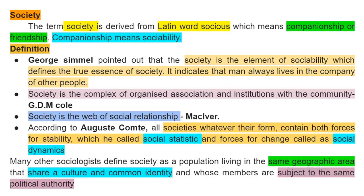So let's start. What is society? The term 'society' is derived from the Latin word 'socius,' which means companionship or friendship. Companionship means sociability, so the term society essentially conveys sociability.